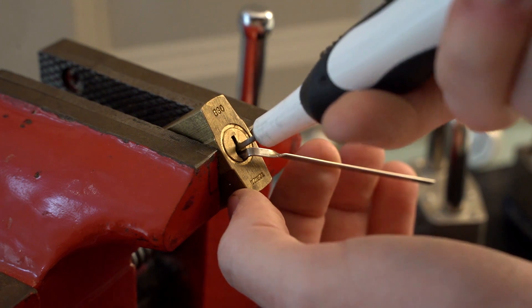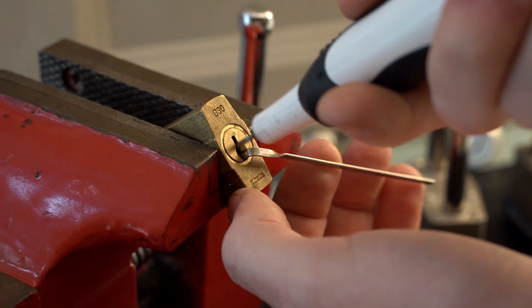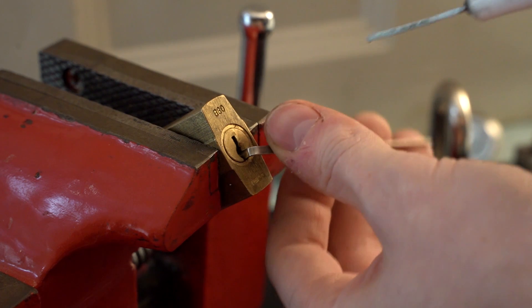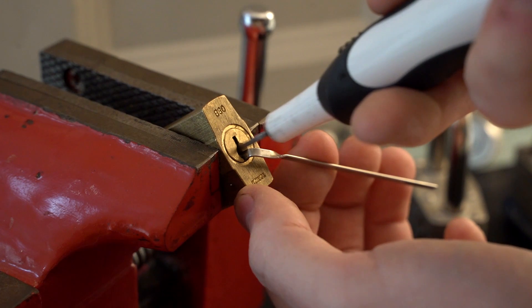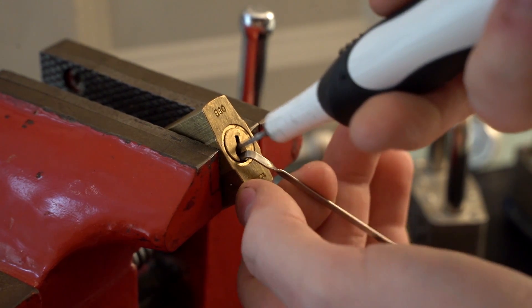It can also be good to occasionally remove the pick tip and reset the lock by turning the tension tool in the opposite direction. This will cause any set pins to fall and fix any false sets or other issues.